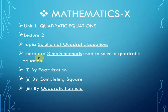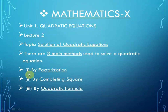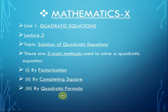There are three main methods used to solve a quadratic equation. The first method is by factorization, the second method is by completing the square, and the third method is by the quadratic formula.